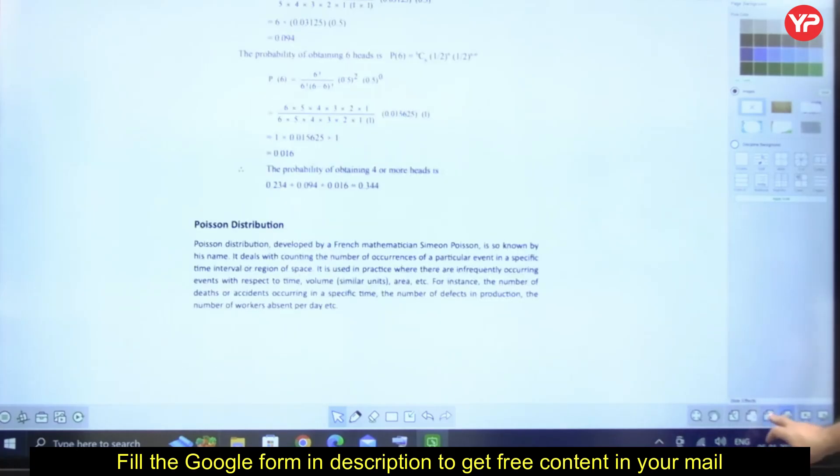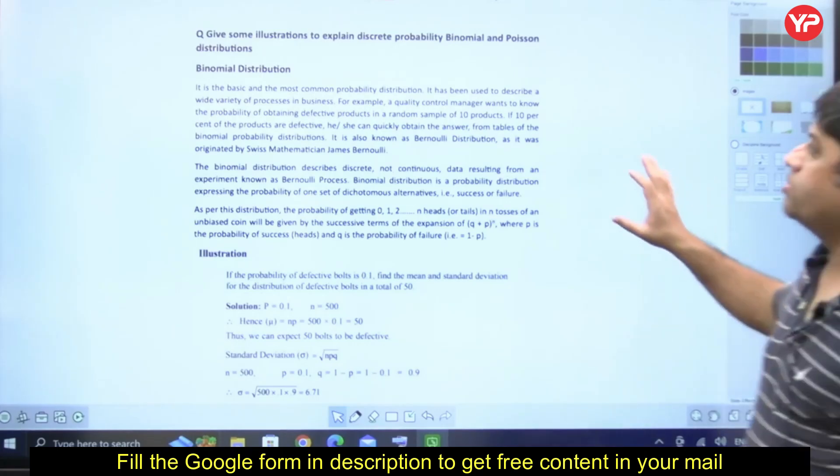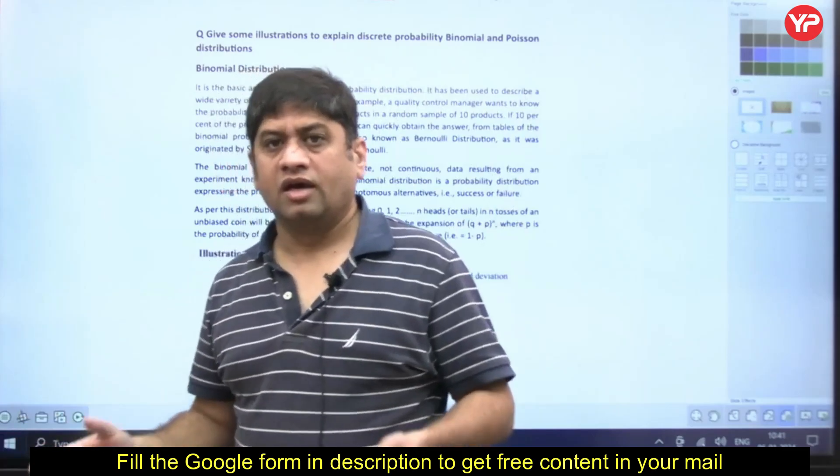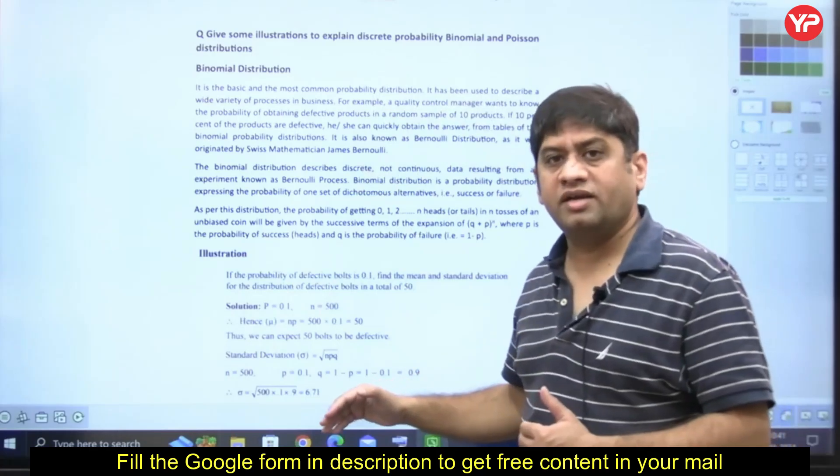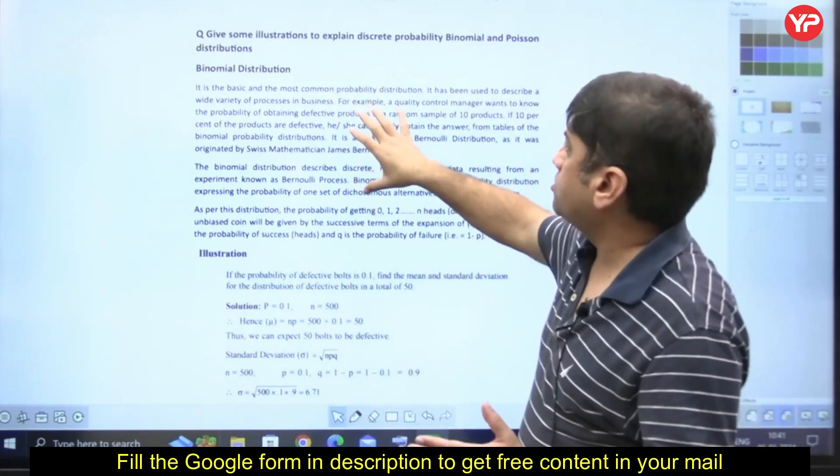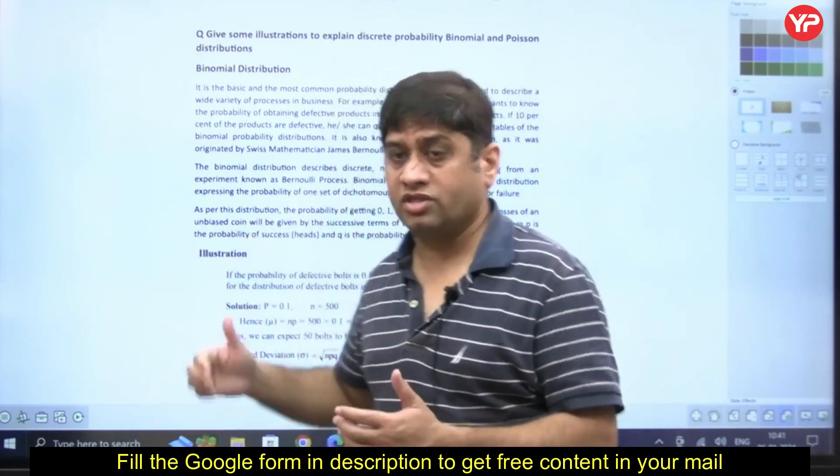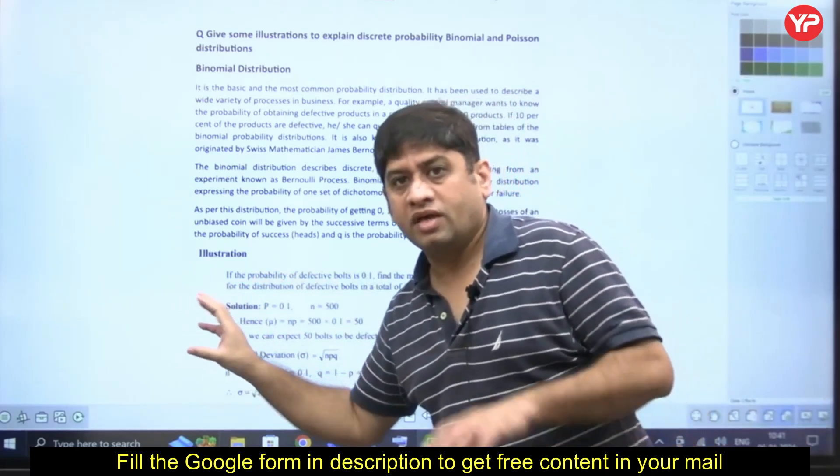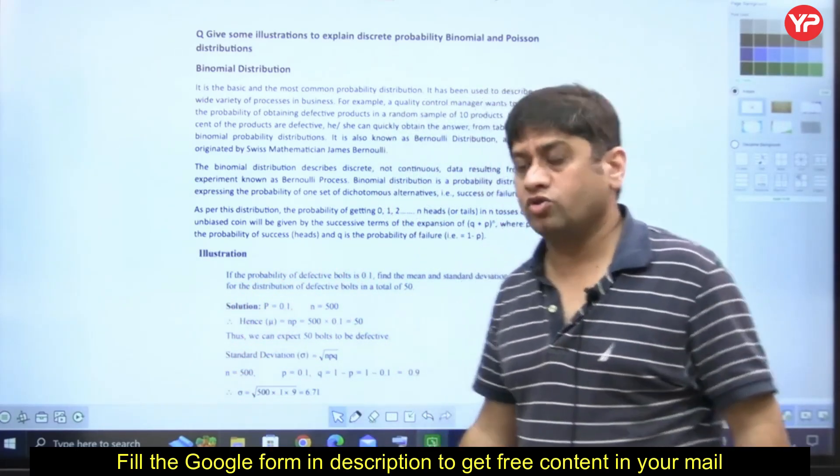Give some illustration to explain discrete probability, binomial and Poisson distribution. Write the question, then compare it with how the mentors have written it. Provide illustrations showing where binomial distribution is used. This can pop up as a numerical in the exam which you need to solve.